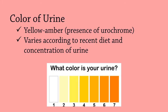What is the normal color of urine? Typically, it is yellow amber or pale yellow due to the presence of the pigment urochrome, but it varies according to the recent diet and the concentration of urine. When the output of urine is low, it appears deep yellow. Drinking more water generally tends to reduce the concentration of urine and therefore causes it to have a lighter color.